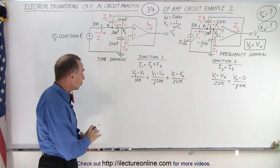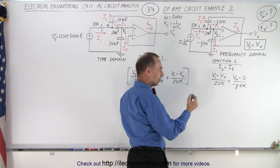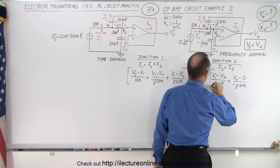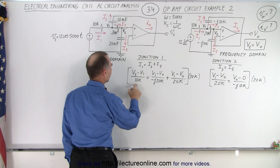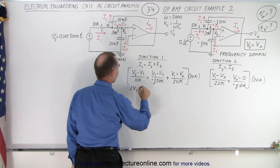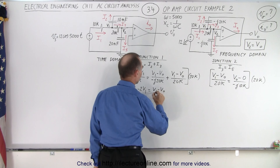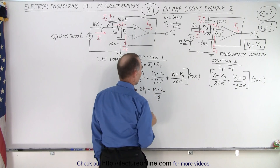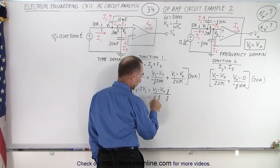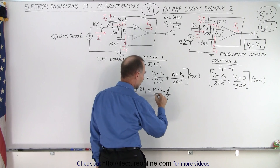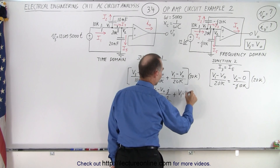To get rid of the denominators, we're going to multiply both sides of both equations by 20k. That gets rid of all the denominators. So over here, we get two times the source voltage minus two times V1 is equal to — here we get V1 minus V_out divided by... we still have the minus J. But we're going to multiply both the top and the bottom by J. J times J is J squared, and J squared times the negative cancels. So the whole denominator cancels. Over here, this is equal to plus V1 minus V_out.